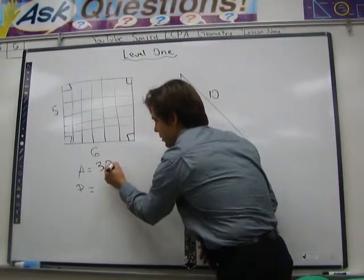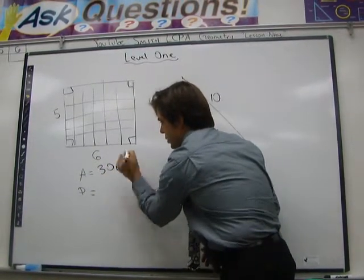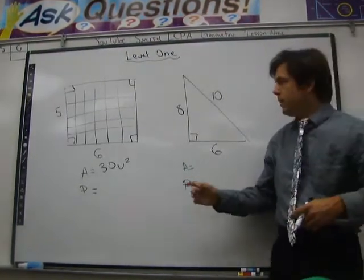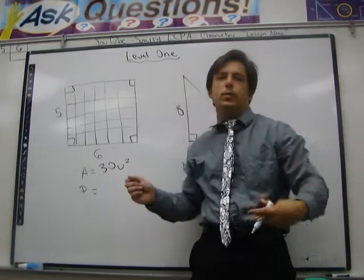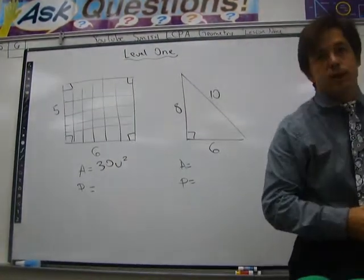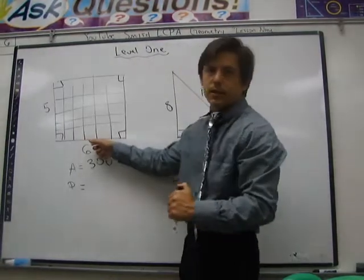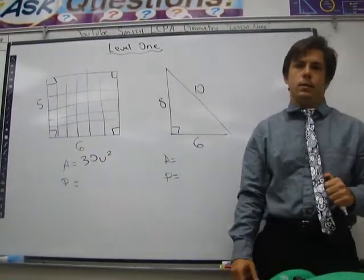So what would the area of this rectangle be? 30 what? Units squared. Okay. Why units? Because if nothing is listed it's units. If there's inches it's inches squared. If it says millimeters it's millimeters squared. There's nothing listed at all. You call it units squared.